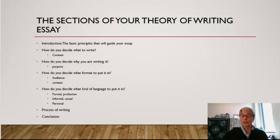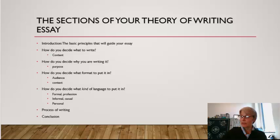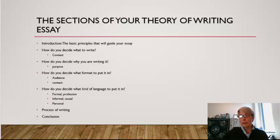The sections of your theory of writing could be, if it's helpful to you, arranging it according to those questions. So you might think about how you decide what to write, and that'll be how you talk about decisions about content. How you decide why you're writing — what is the purpose of the writing — and how, when you consider purpose, how does that change what you decide, what kind of content you decide to talk about.